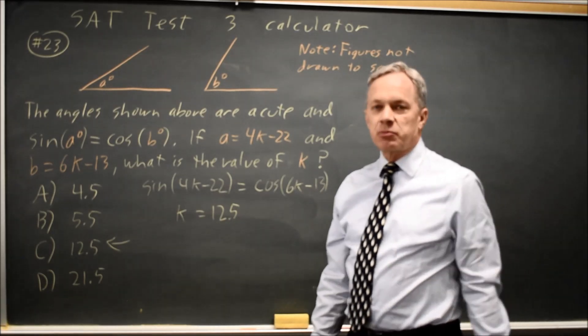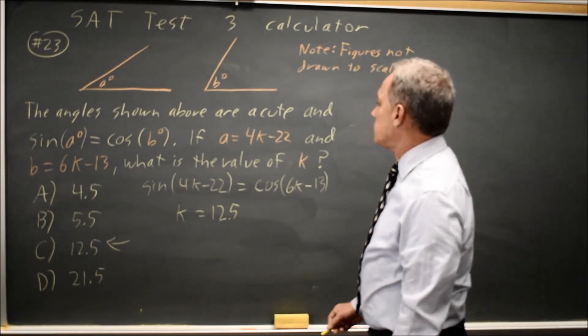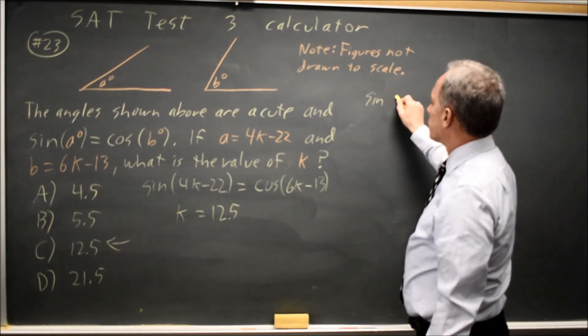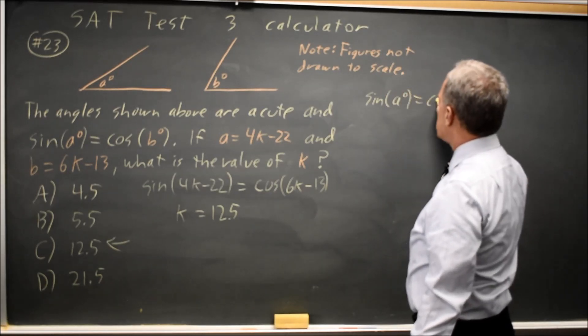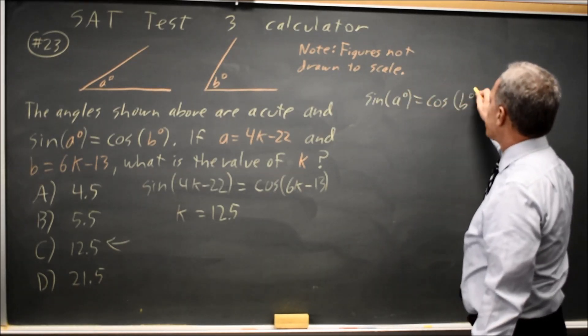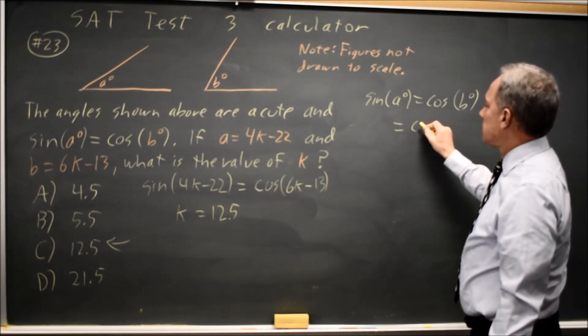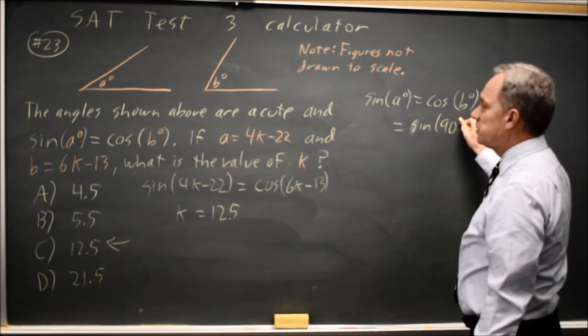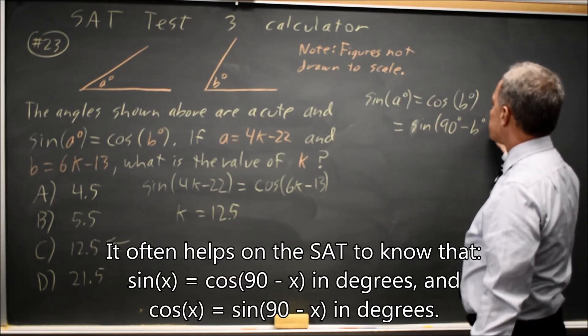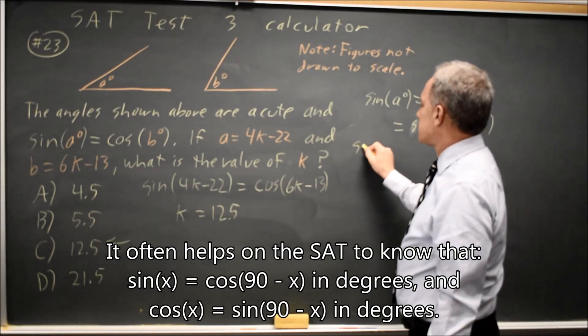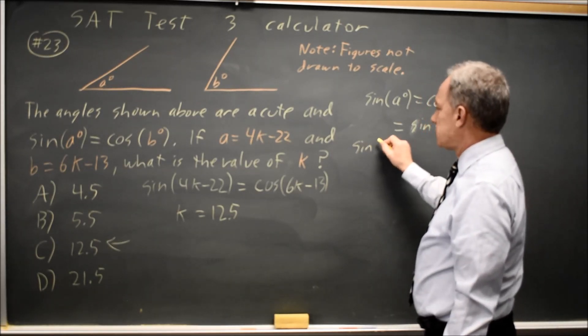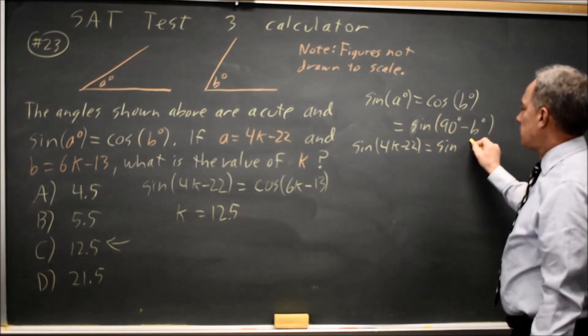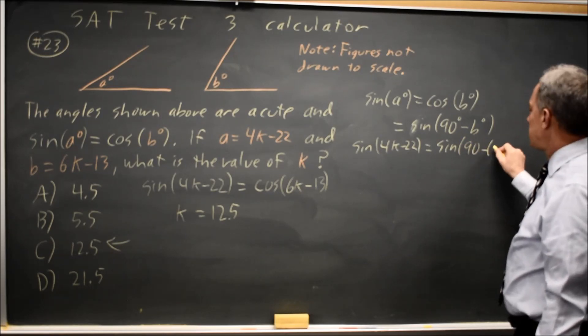If I wanted to do the math to solve this problem, then I would say that the sine of angle A equals the cosine of angle B. But the cosine of angle B is the same as the sine of 90 degrees minus B degrees. So that is the sine of angle A, which we're told is 4k minus 22 equals the sine of 90 minus the quantity.